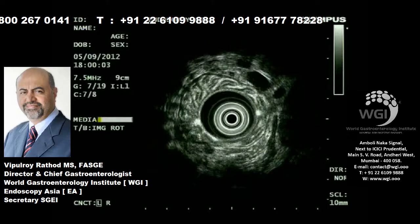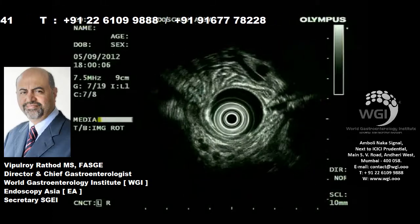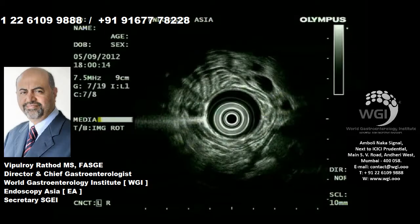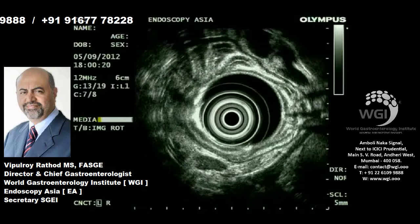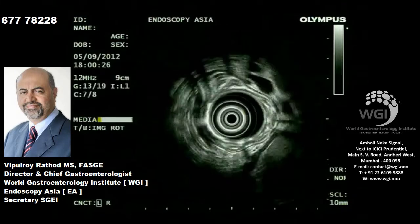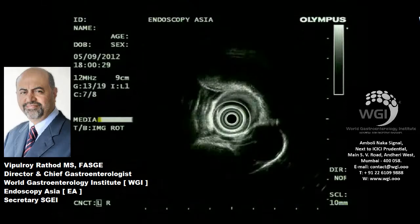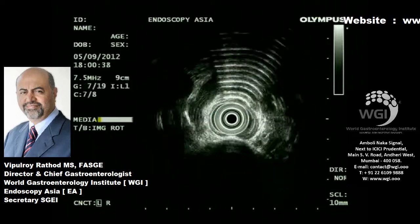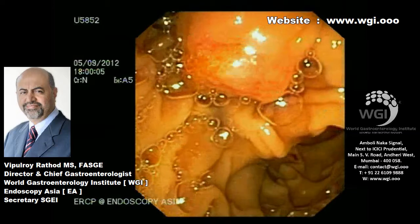We are seeing a few sub-centimeter hyperechoic nodes very close to the celiac artery with hyperechoic centers in the irregular nodes. This could be secondary to a few episodes of mild cholangitis. You can see the mediastinum there. Subsequently, we went ahead with ERC.